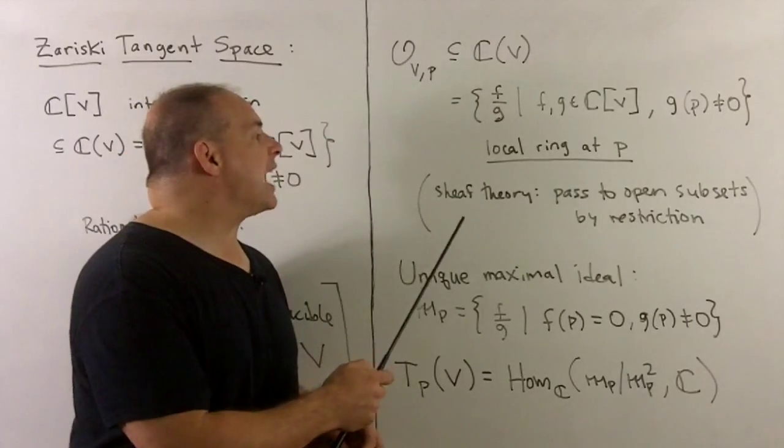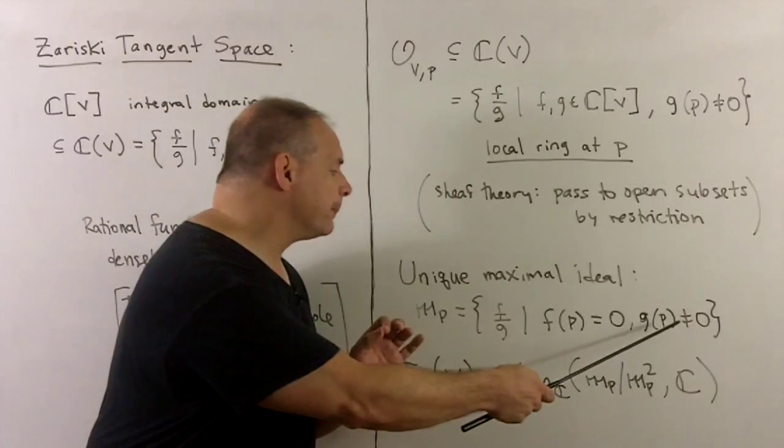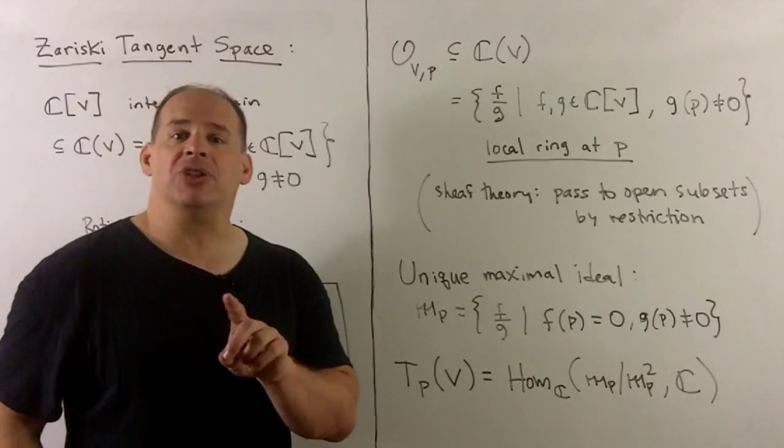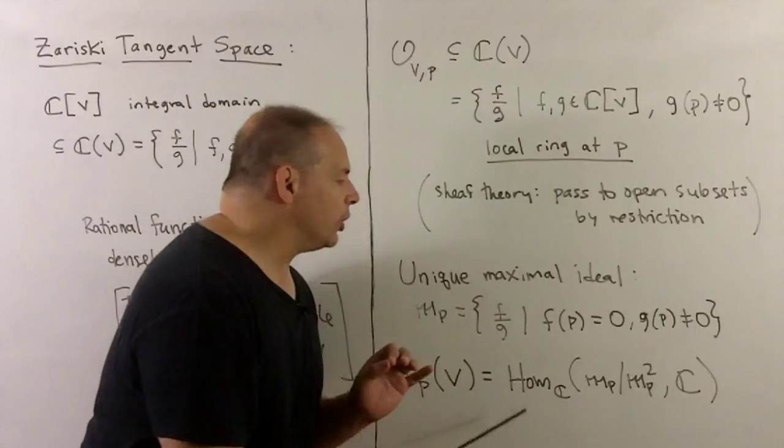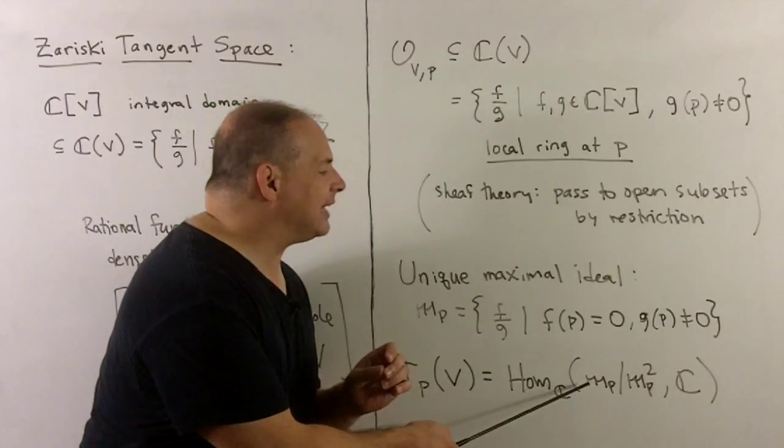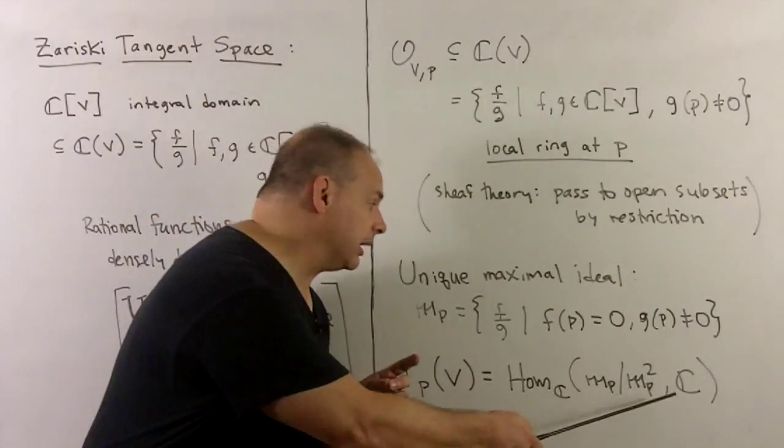Inside the local ring, we have a unique maximal ideal, just given by where the numerator vanishes. We'll define Zariski tangent space as the space of linear functionals on—we have our maximal ideal modded out by its square. The big question is, what does this mean?